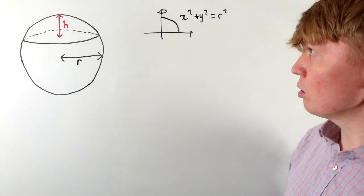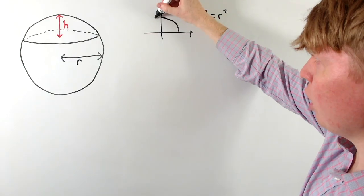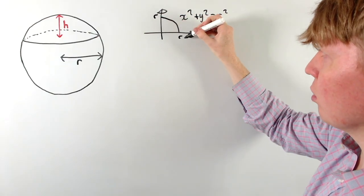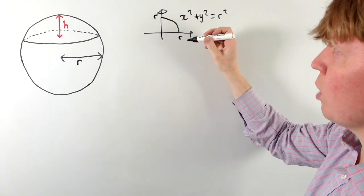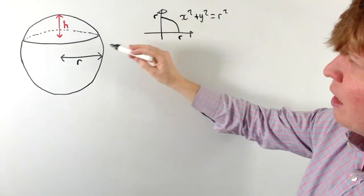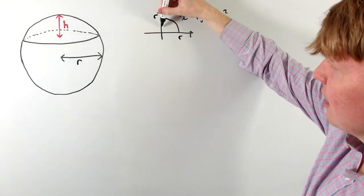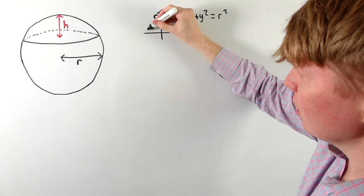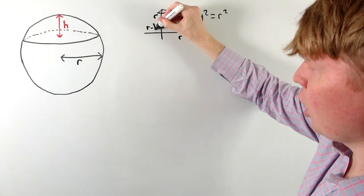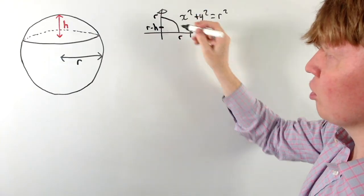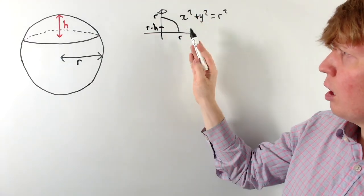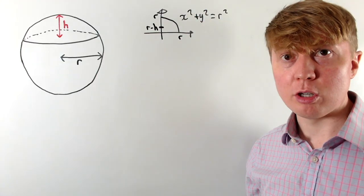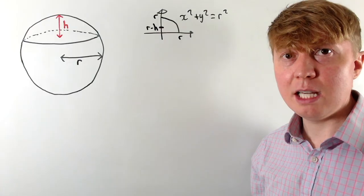We set up coordinates: r is the height at the top, and r goes across as well. In order for the cap height to be h, the lower limit on the y-axis needs to be r minus h. We then define this volume of revolution using an integral.